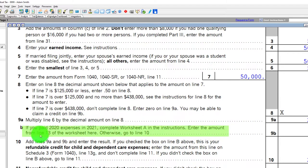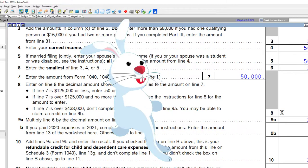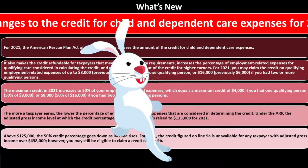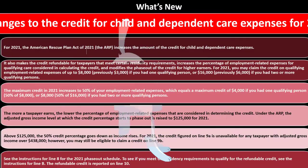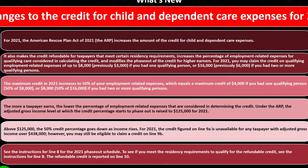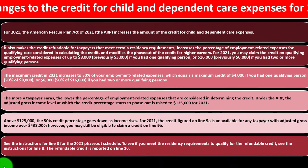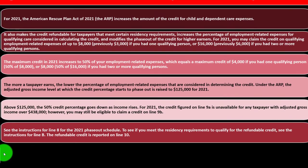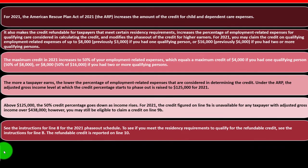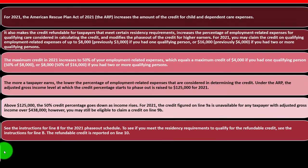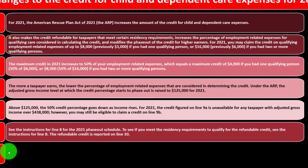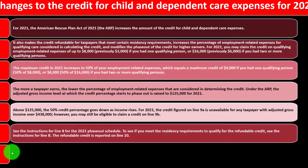If you had 2020 expenses paid in 2021, you could complete the worksheet accordingly. See the instructions for line 8 for the 2021 phase-out schedule and to see if you meet the residency requirements to qualify for the refundable credit. See instructions for line B.